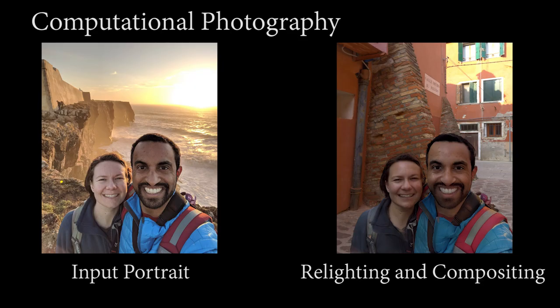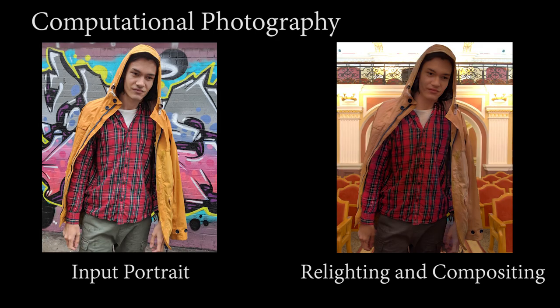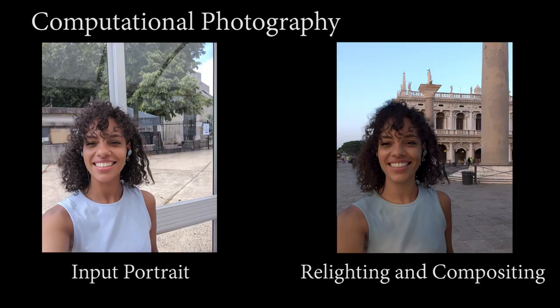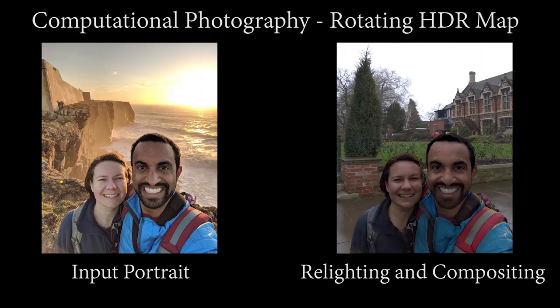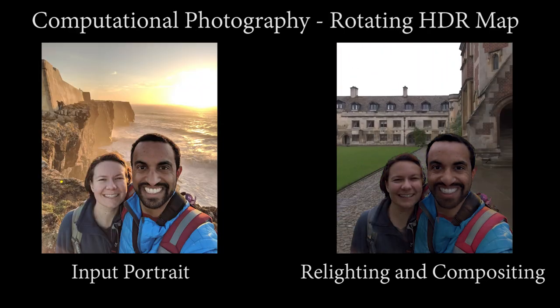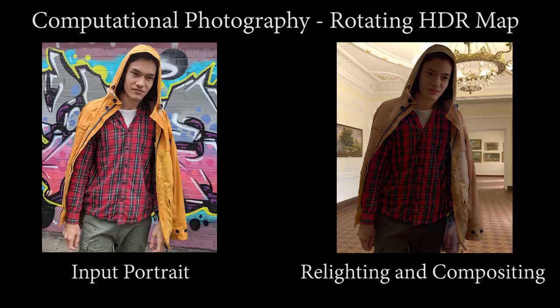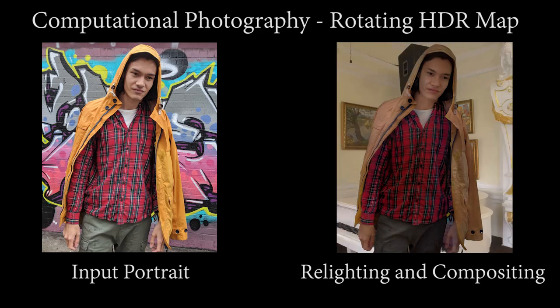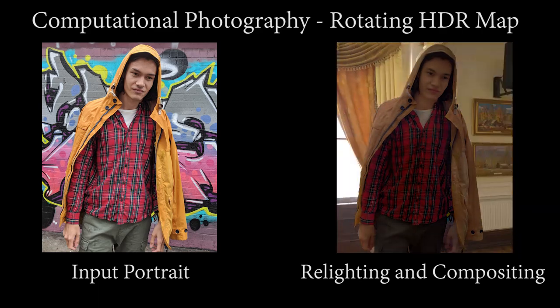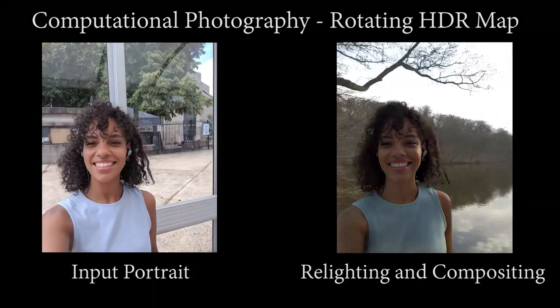Our work has several potential applications. As the core technique generalizes well to in-the-wild portraits, our method can be used to relight and composite anyone into a novel scene given the target illumination. Here we show a few different examples. We can also extend this technique to rotate the lighting environment around the subjects, demonstrating dynamic relighting. Our relighting method synthesizes view-dependent reflection effects like specularities, and our high-quality matting module ensures a seamless composite.